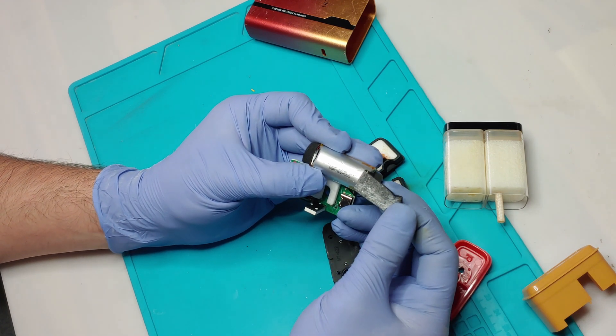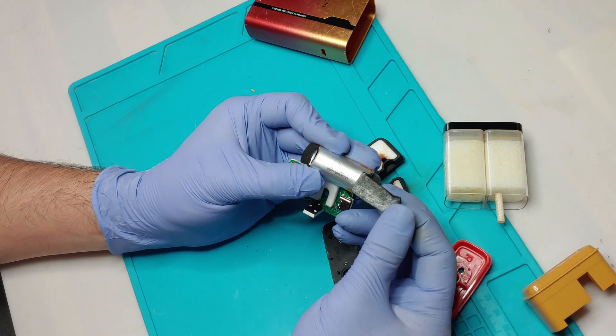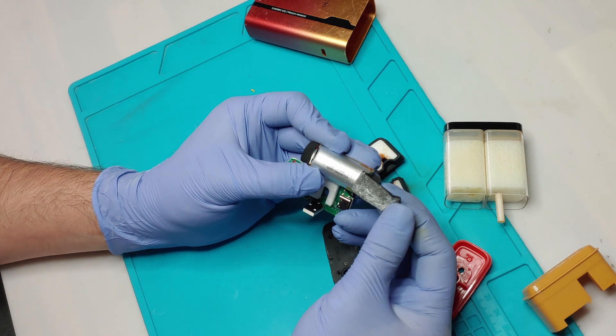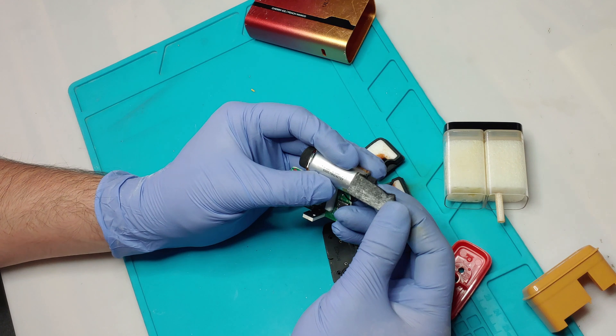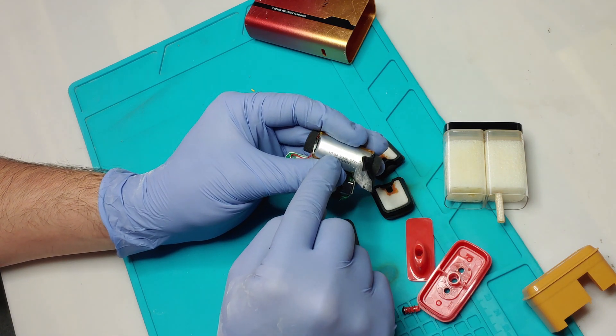It's 3.7 volts obviously. And it doesn't say the mAh. It just says the watt hour. So you'll have to do the calculation to figure it out. And that's the battery size.